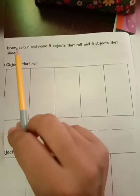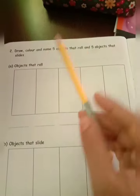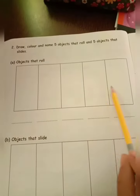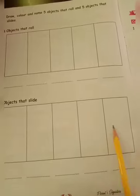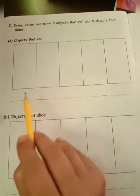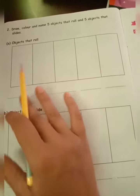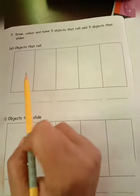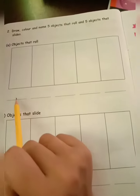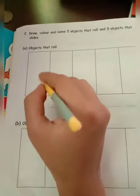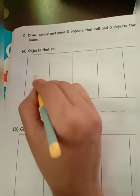You have to draw here five objects which roll and you will draw here five flat objects which can slide. And you will write the name also. You can draw here apple, so you will write here apple, for example. I will show one.